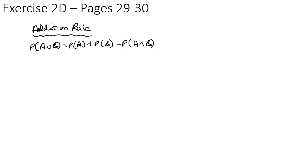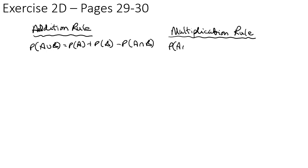You should now be able to do exercise 2D on pages 29 to 30. Just a reminder of the rules: the addition rule states P(A∪B) = P(A) + P(B) − P(A∩B), where we take off the overlap so we don't count it twice. And the multiplication rule states P(A∩B) = P(A|B) × P(B).